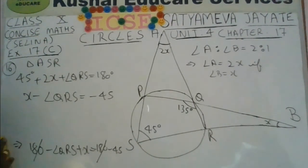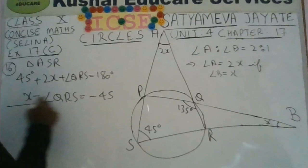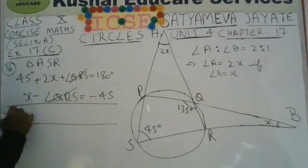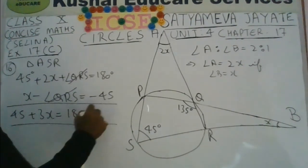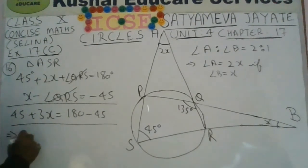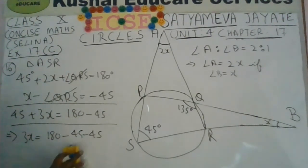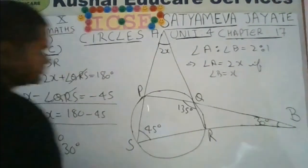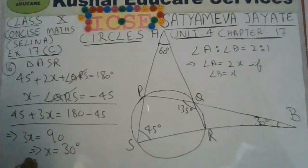Add the two equations. In one equation there is plus angle QRS and in the other there is minus angle QRS, so they cancel, leaving only one variable x. The resulting equation is 45 plus 3x equals 180 minus 45, giving x equals 30 degrees. Therefore angle B is 30 degrees and angle A is 2 times 30, that is 60 degrees.